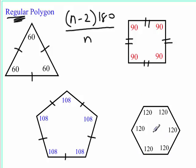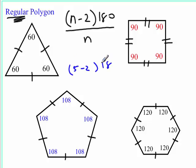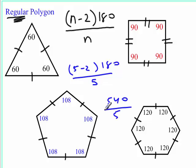For a regular hexagon, all interior angles are 120 degrees and all sides are congruent. Here's how we get 108 for a pentagon: take 5 minus 2 times 180, divided by 5. That's 3 times 180, which is 540, divided by 5, giving you 108 — assuming it is a regular polygon.